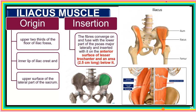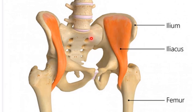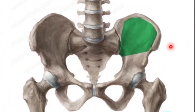For the origin of the iliacus muscle, it picks origin from the upper two-thirds of the floor of the iliac fossa, from the inner lip of the iliac crest, from the upper surface of the lateral part of the sacrum. Its fibers converge on the lateral side of the psoas major and run with it to insert on the lesser trochanter of the femur.